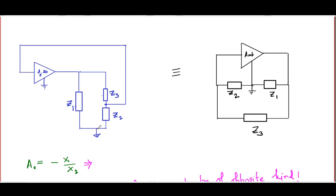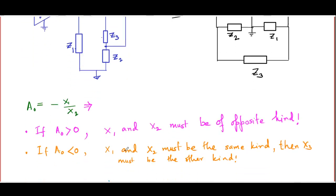The circuit on the left emphasizes the amplifier with its feedback, while the same circuit is often drawn differently in textbooks. In the alternative drawing: Z1 is connected between the amplifier output and ground; Z2 is connected between ground and the amplifier input; and Z3 is connected between the output and the input. Although these two representations look different, they describe exactly the same connections.